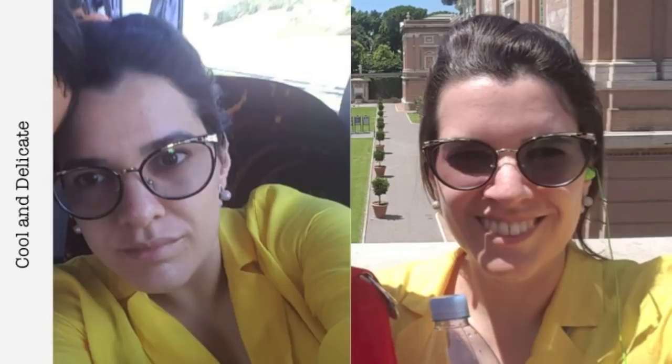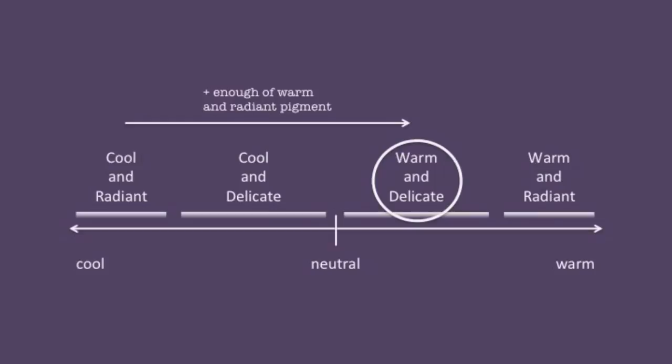Here she is looking cool and delicate. She doesn't have that same radiance to her skin — it's more of a soft glow now, but still a cool color to the skin. Then when she adds enough of her warm and radiant pigment, she might become warm and delicate because she's on her way to warm and radiant. If she adds enough of that pigment, eventually she will be warm and radiant. But since she didn't add enough yet, she is warm and delicate on her way to being warm and radiant.